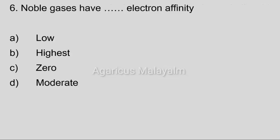Sixth question. Noble gases have dash electron affinity. Option A, Low; Option B, Highest; Option C, Zero; Option D, Moderate. Correct answer: Option C, Zero.